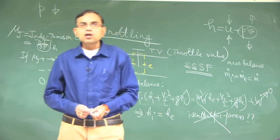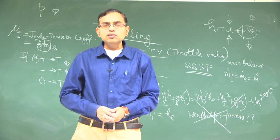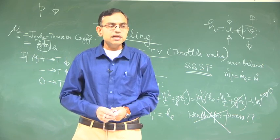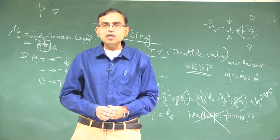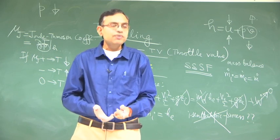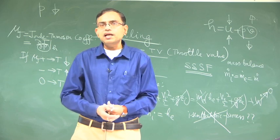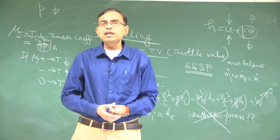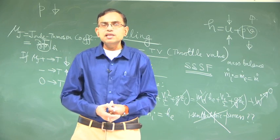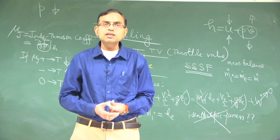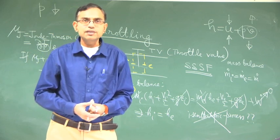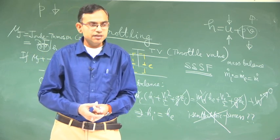To summarize, in today's lecture we discussed a special type of process across a control volume called the steady state steady flow process and gave throttling as a very practical example. This is common in industries and in refrigerators. We will see several other practical engineering examples concerning steady state steady flow processes, and these devices are called steady state steady flow devices. We will take that up in the next lecture.